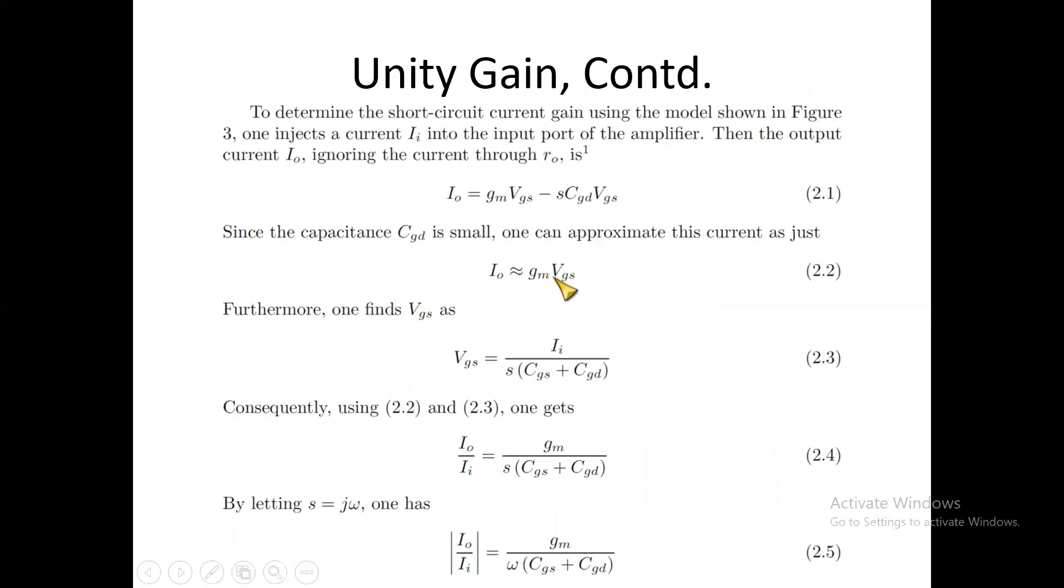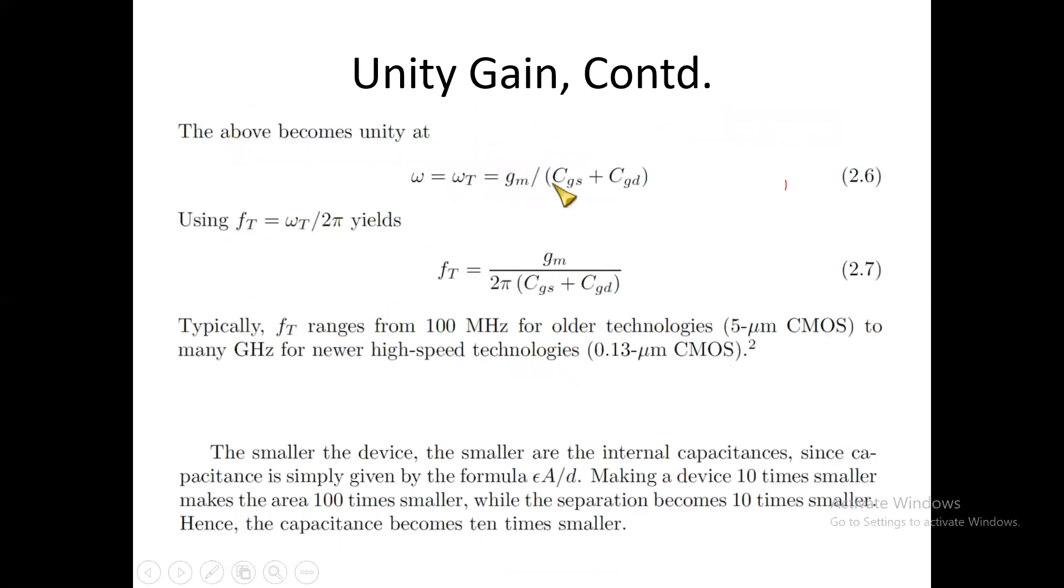We can substitute VGS into the equation: I0 equals GM times Ii divided by s(CGS + CGD). This gives us the short circuit current gain I0/Ii equals GM divided by s(CGS + CGD). When this value equals 1, we have unity gain. At that frequency, ωT equals GM/(CGS + CGD). For the ratio to become unity, ωT equals GM/(CGS + CGD).